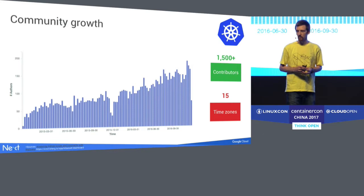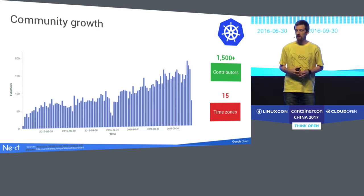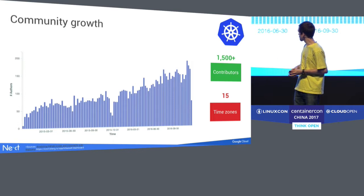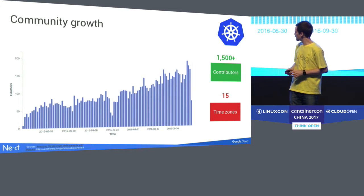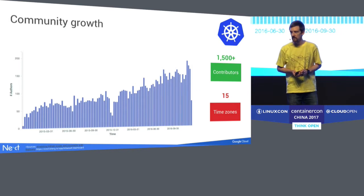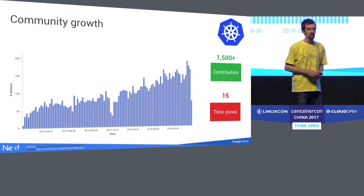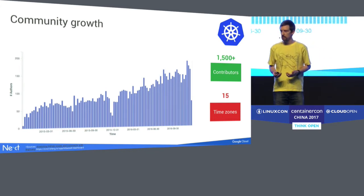The community growth is quite large. Looking at the number of active contributors week over week — that dip there is Christmas — we can see that some people are committed enough to Kubernetes that they're committing over the holidays. We have well over 1,500 contributors to the Kubernetes project itself, spanning over 15 time zones, meaning pretty much any time zone would have a Kubernetes contributor in it.